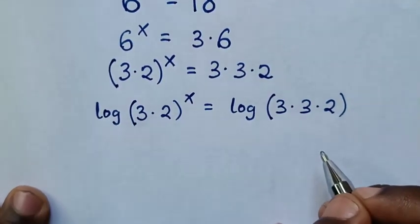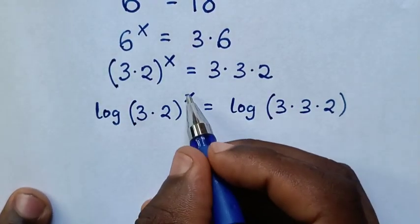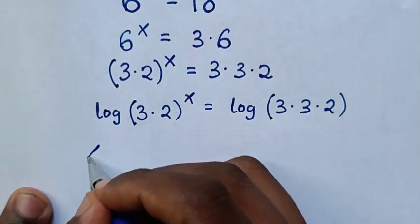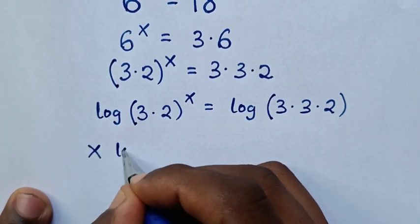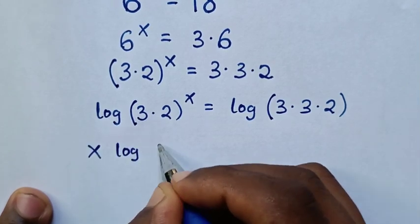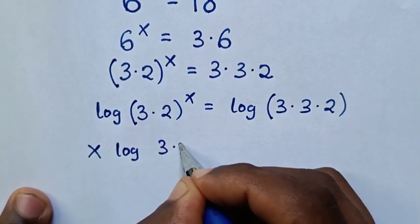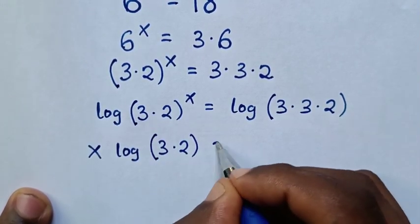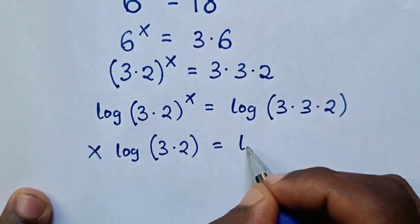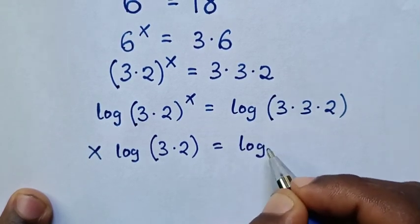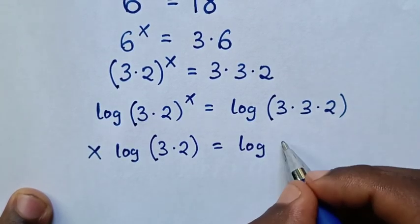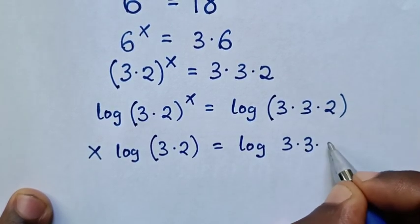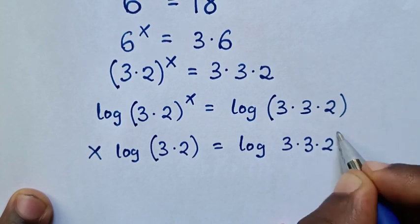Then in the next step, this power of x will move to the base. So it will be x times log of bracket 3 times 2 is equal to log of bracket 3 times 3 times 2.